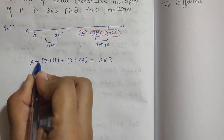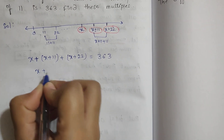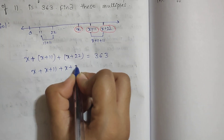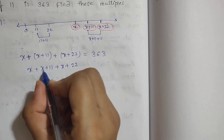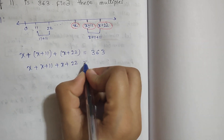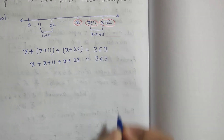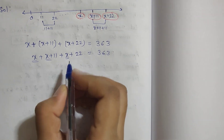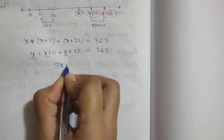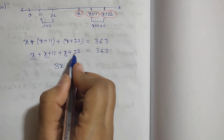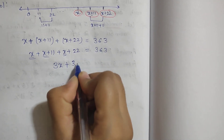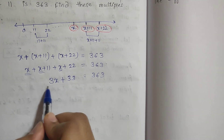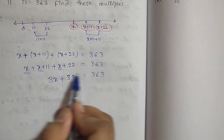Opening the brackets — since it is addition, the signs remain unchanged. We get x plus x plus x plus 11 plus 22 equals 363, which simplifies to 3x plus 33 equals 363.